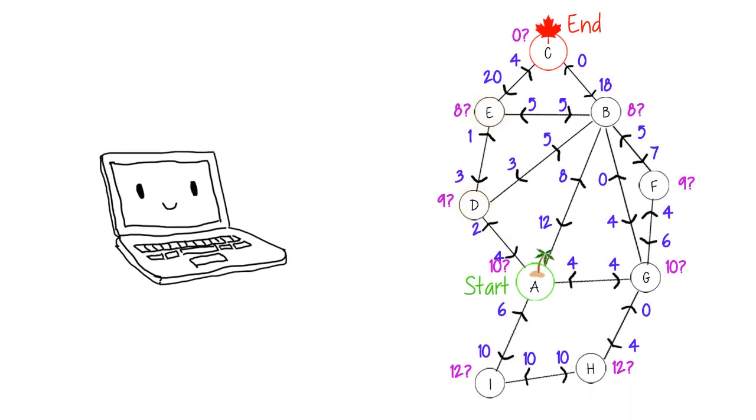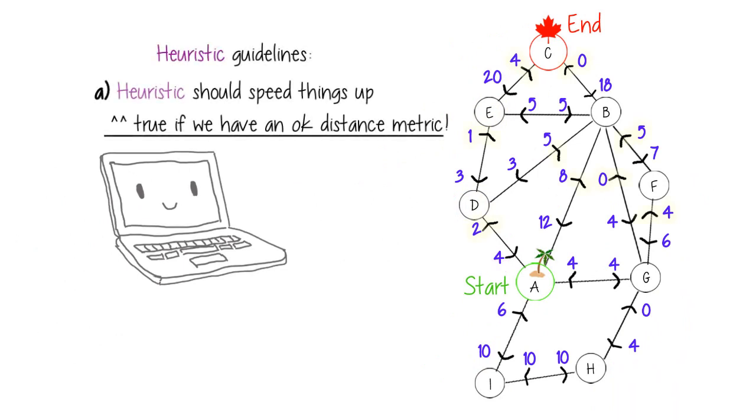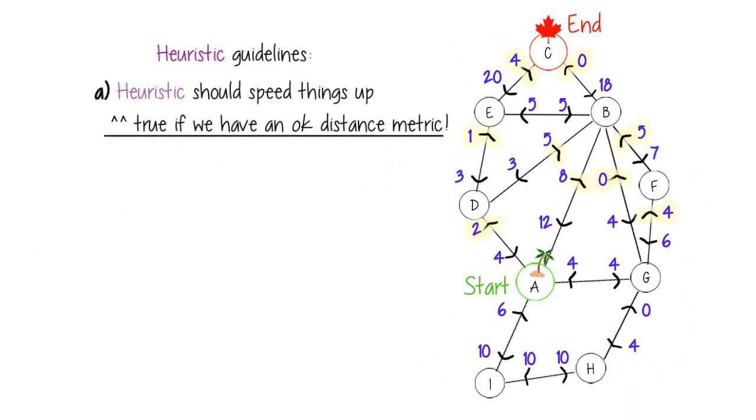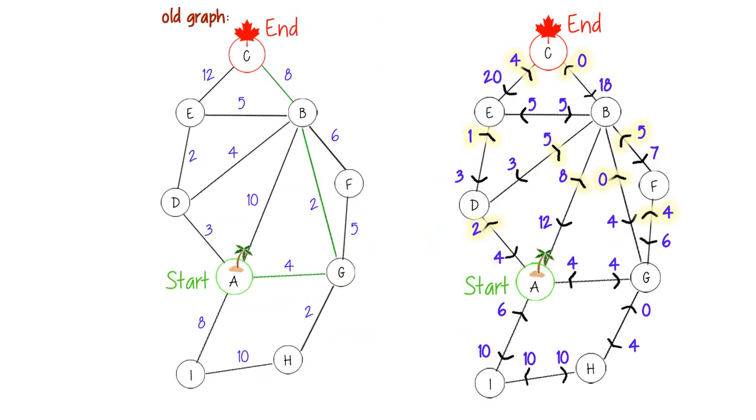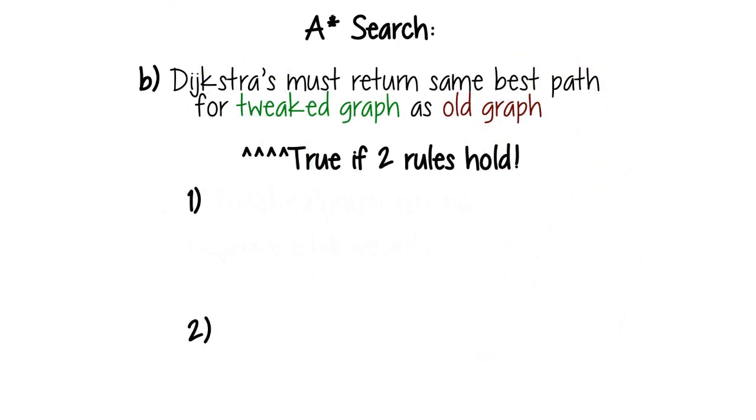So clearly we're nudging Dijkstra's towards the end, so it'll find a path there faster, but when it does, will it still find the same best path as if we didn't do all this crap to the edge weights? And it turns out, yes it will, as long as our heuristic follows these two rules.